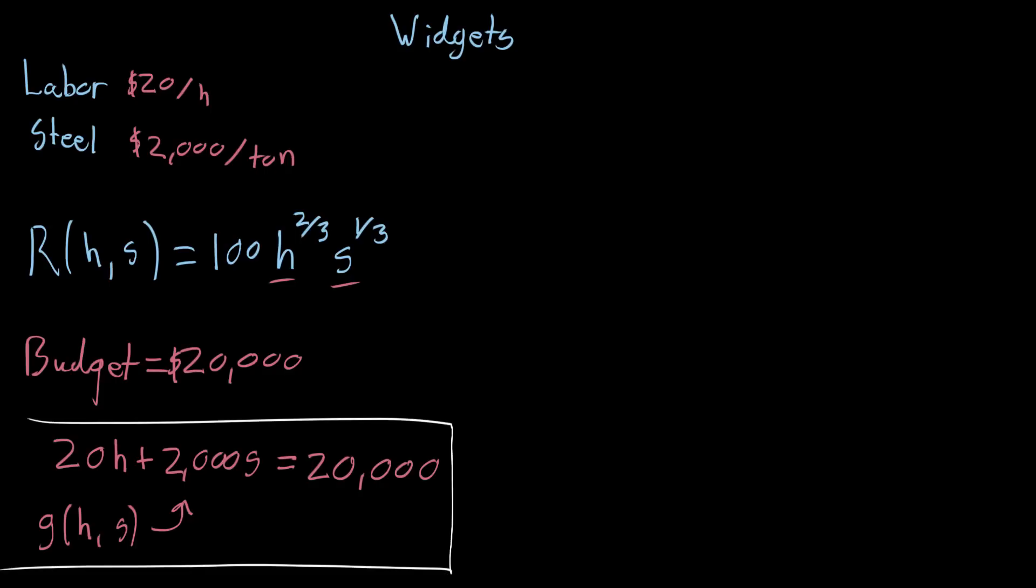And now, if you'll remember in the last few videos, the way we visualize something like this is to think about the set of all possible inputs, so in this case, you might be thinking about the hs plane, the number of hours of labor on one axis, the number of tons of steel on another, and this constraint, well, in this case, it's a linear function, so this constraint is gonna give us some kind of line that tells us which pairs of s and h are gonna achieve that constraint. And then the revenue function that we're dealing with will have certain contours, maybe revenues of $10,000 have a certain contour that looks like this, and revenues of $100,000 have a certain contour that looks like this.